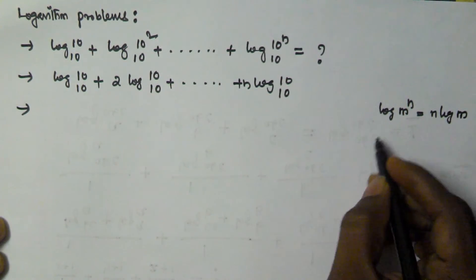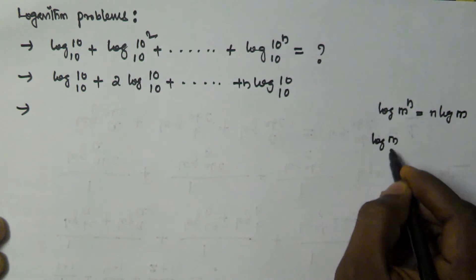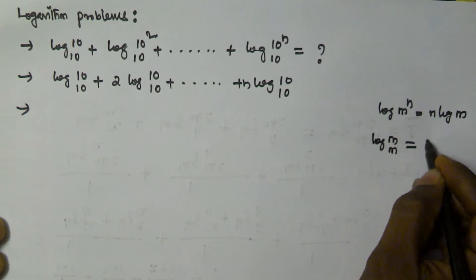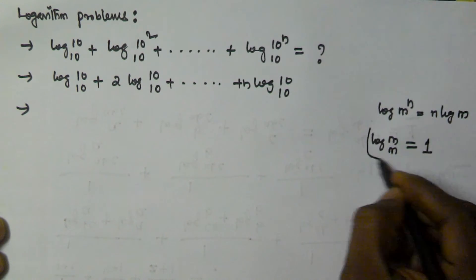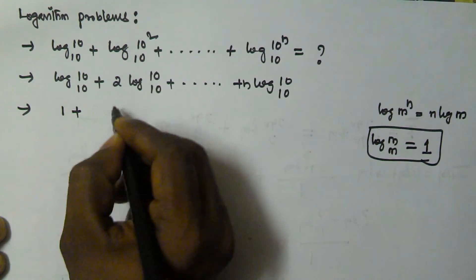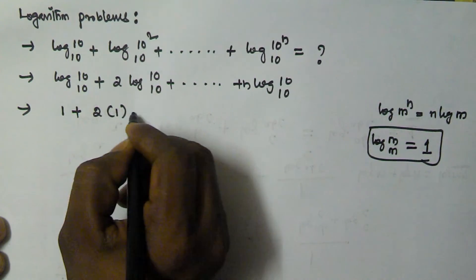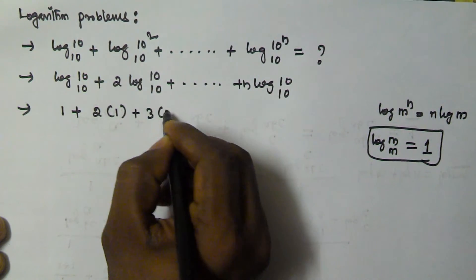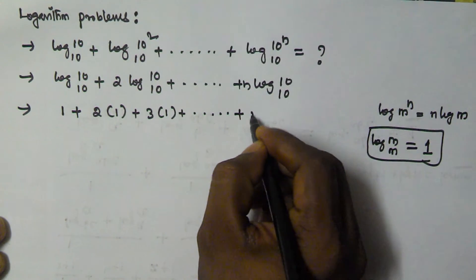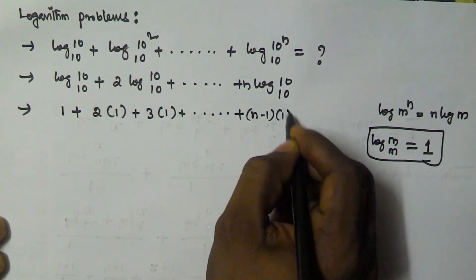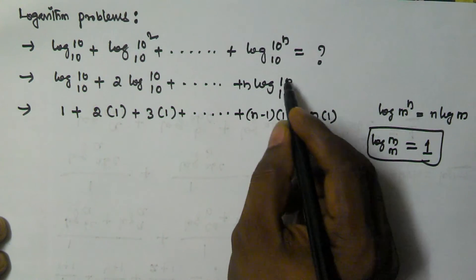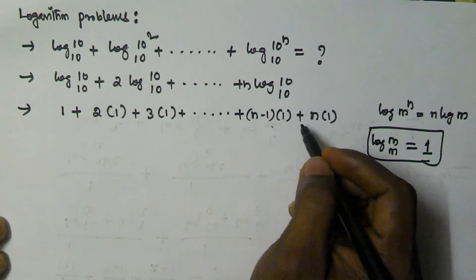We know that log m base m — when the value and its base are equal — the value is equal to 1. So here, this becomes 1, and the next term is 2 into 1, then 3 into 1, and so on, up to n minus 1 into 1, plus n into 1.